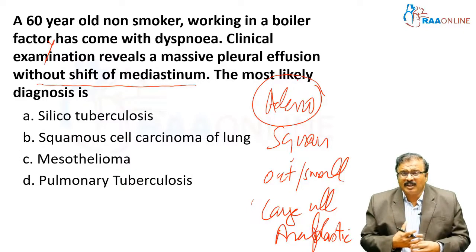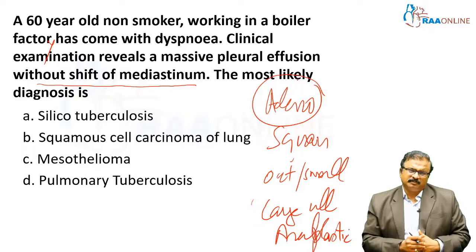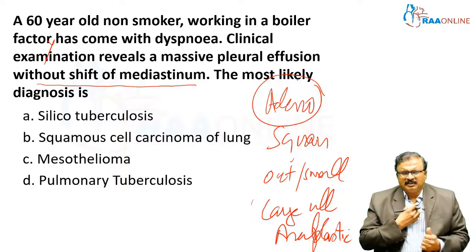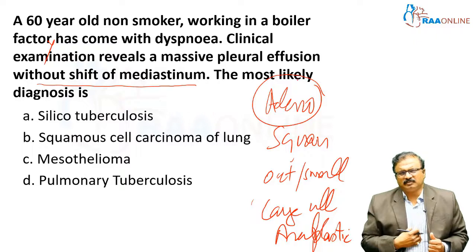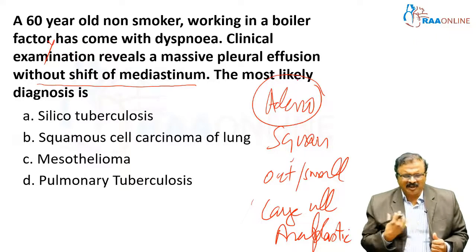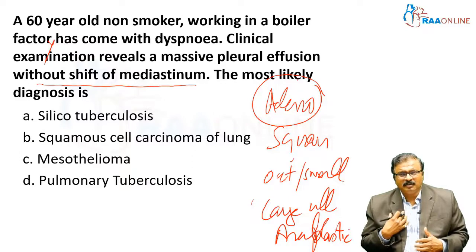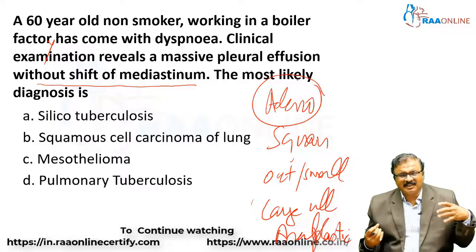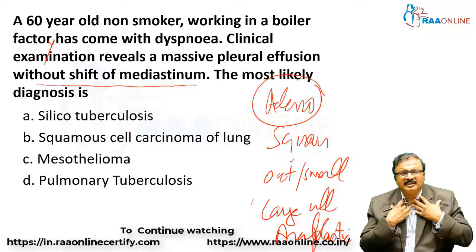What are the conditions where there is massive pleural effusion but no shift of the mediastinum? One condition is mediastinal fibrosis, where the mediastinum cannot shift to any side because it is already fixed. Or there may be a compensatory situation where one side has pleural effusion, but the other side also has some volume loss, so the trachea and mediastinum are not shifted.